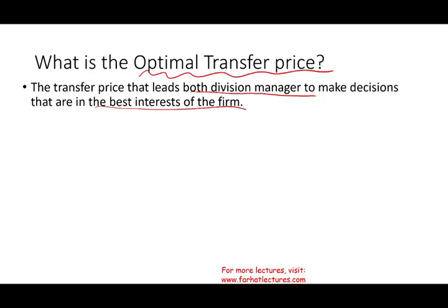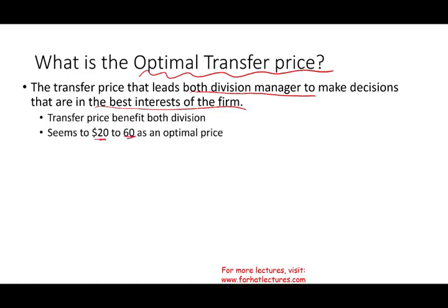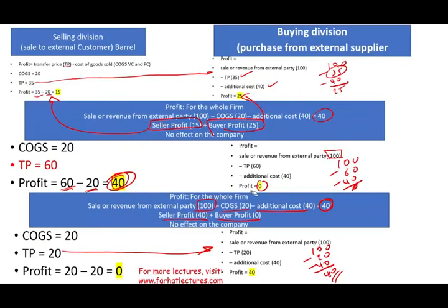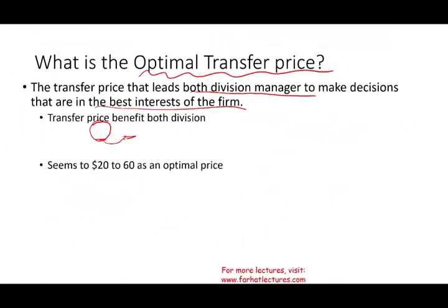The optimal transfer price is the one that leads both divisions to make decisions that are in the best interest of the firm. It seems that any price between $20 and $60 keeps both parties functional — anything above $20 means the milk division makes a profit, and up to $60 the cheese division remains profitable. If they charge $62, the milk division makes more but the cheese division loses $2. So $20 to $60 seems to be the optimal range.